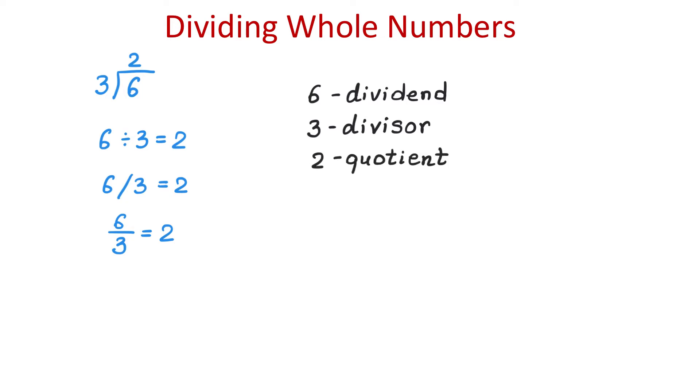We know that division is the reverse operation of multiplication and the division can be checked by using multiplication. So if 6 divided by 3 equals 2, then 3 multiplied by 2 will give us 6. So we can write that 3 multiplied by 2 equals 6.